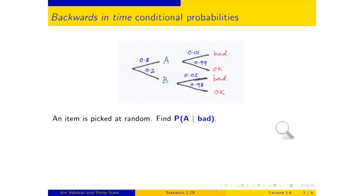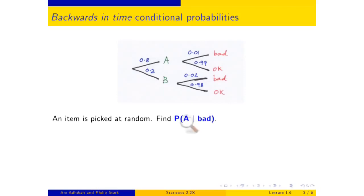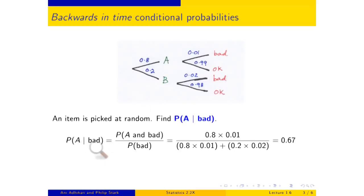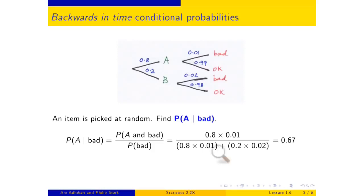Schematically, we know the widget is either in the 'A and bad' branch or the 'B and bad' branch. Those two branches become my total space — the OK branches are excluded. So the chance that it came from machine A given that it's bad is the chance of the top branch (A and bad) divided by the total chance that the thing is bad. The chance of the top branch is 0.8 times 0.01, and the total chance is the sum of both branches.